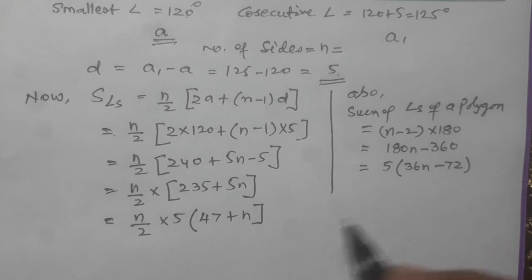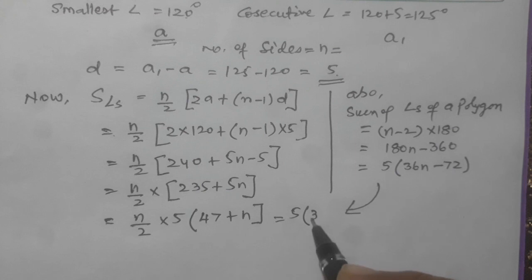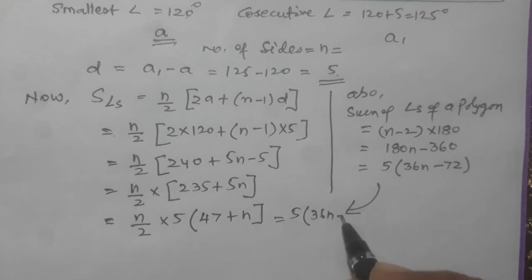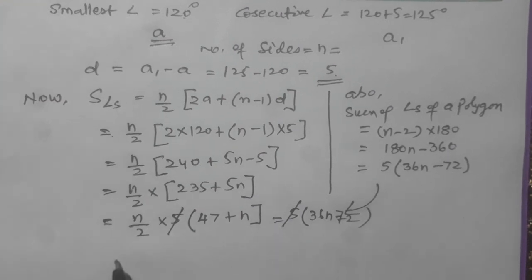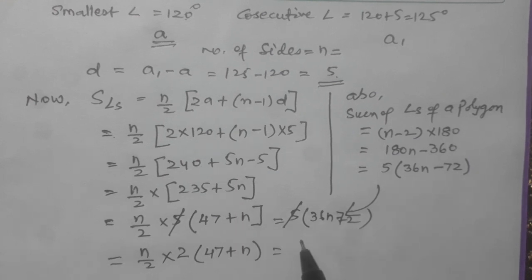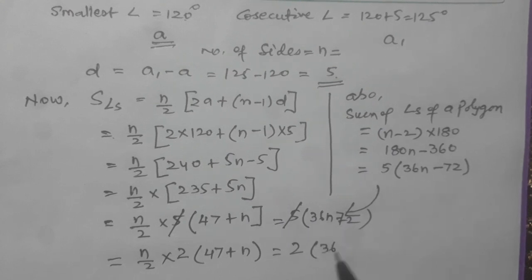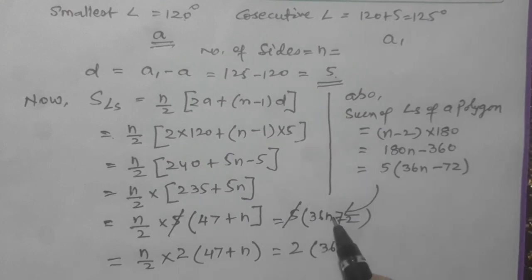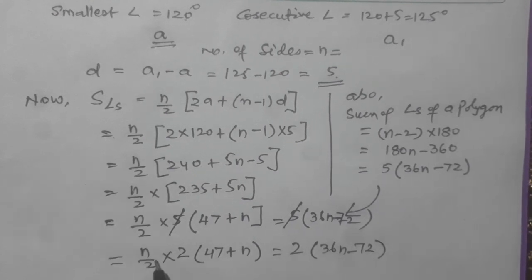Now it will be equal to 5 times 36N minus 72. This 5 and this 5 cancel. So N by 2 we shall multiply by 2, 47 plus N equals 2 we shall multiply also here, 36N minus 72. This 2 and this 2 will be cancelled.